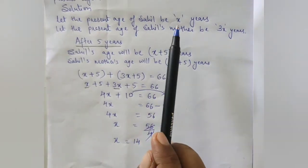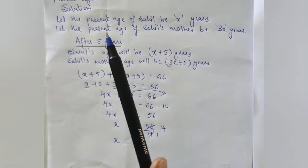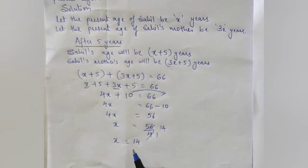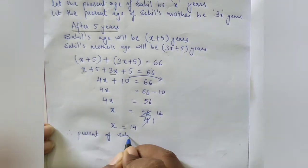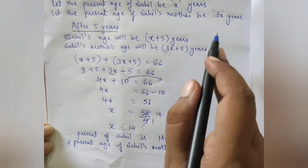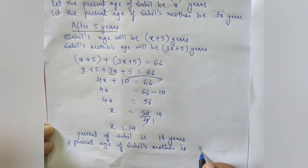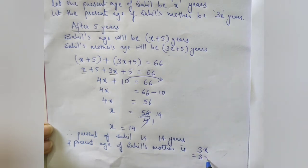x is the present age of Sahil, so the present age of Sahil is 14 years. The present age of Sahil's mother is 3x = 3 × 14 = 42 years. So we write: present age of Sahil = 14 years and present age of Sahil's mother = 3 × 14 = 42 years.